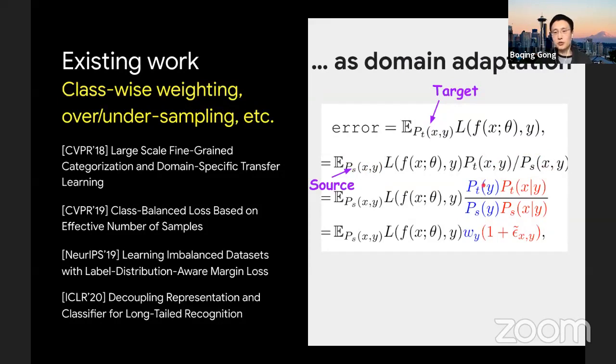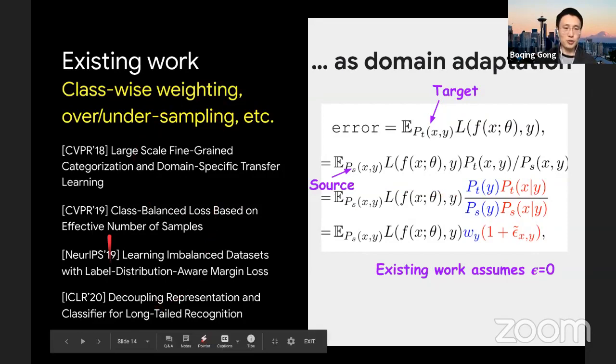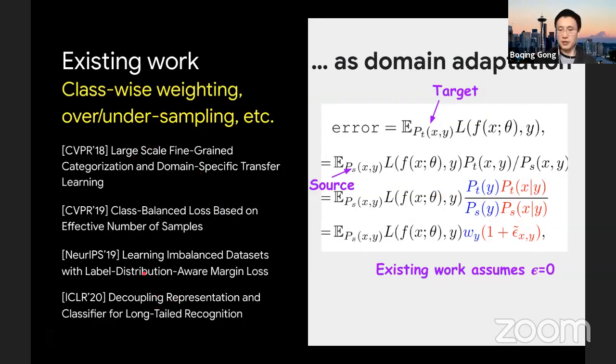If we decompose them into a marginal over class, here ps is the source. We know it's long tailed. Pty is the target. We know we expect it to be roughly balanced because we don't want the model to be biased to any of the classes. We want it to perform well over all classes. So we use a roughly balanced testing set to test the model. Also, we got conditional distributions here. And further, we wrote them into some omega y and one plus this for these parts. And you can see, by trying to weigh different terms in the training over classes, these approaches, they are effectively assuming that epsilon is zero.